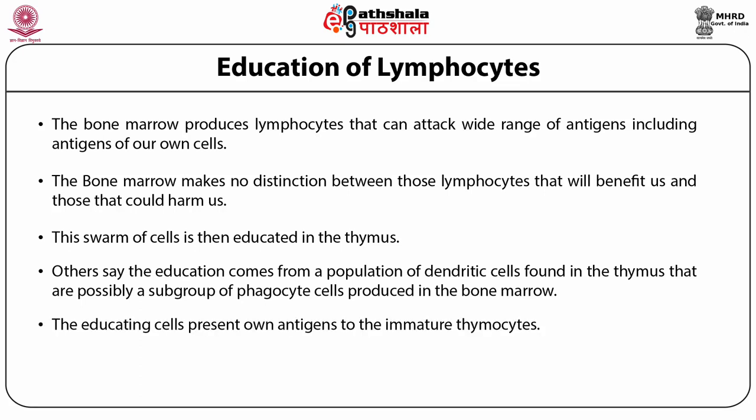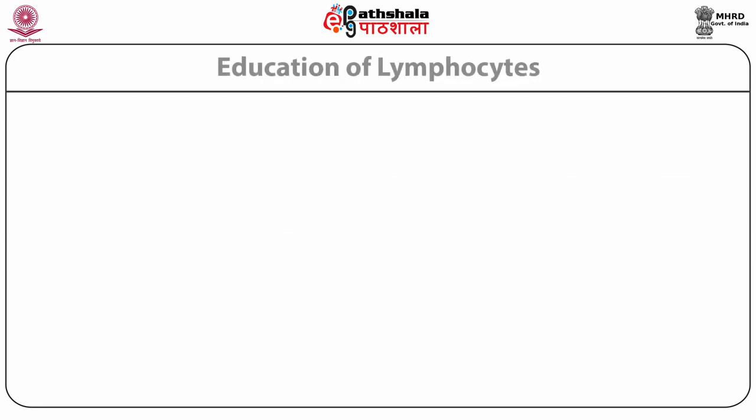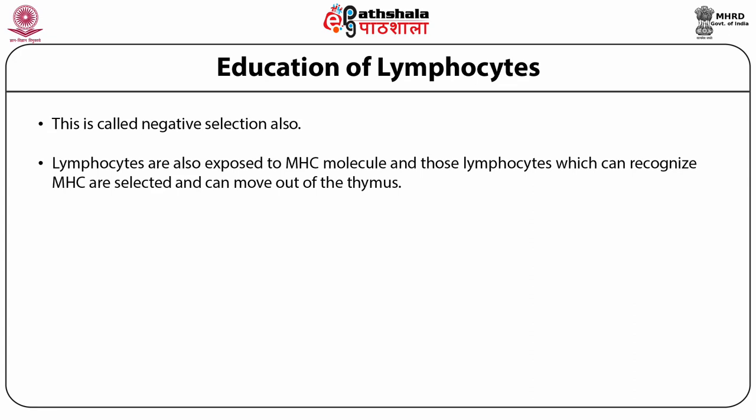The educating cells present self-antigen to the immature thymocytes. Those that are able to respond to the presented antigens die. Those that do not respond are presumed to be protective and beneficial, and will mature to leave the thymus — this is called negative selection. Lymphocytes are also exposed to MHC molecules, and those lymphocytes which can recognize MHC are selected and can move out of the thymus — this type of selection is known as positive selection.